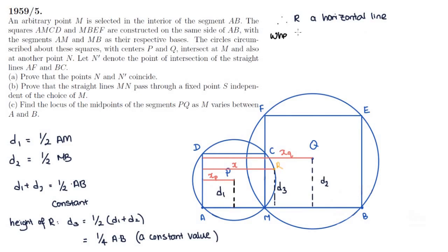So when M is all the way at point A, then MB is equal to AB, and MBEF is the entire square. Then the horizontal distance XQ would be half of AB, because Q would be half of that big square with base MB, which is equal to AB. XP would just be zero, because P would be at A. And X is half of XP plus XQ, which is half of half AB, which is a quarter AB.